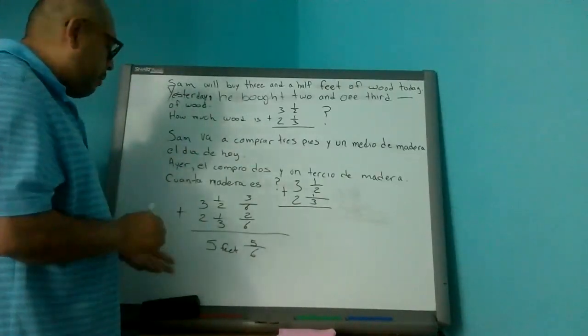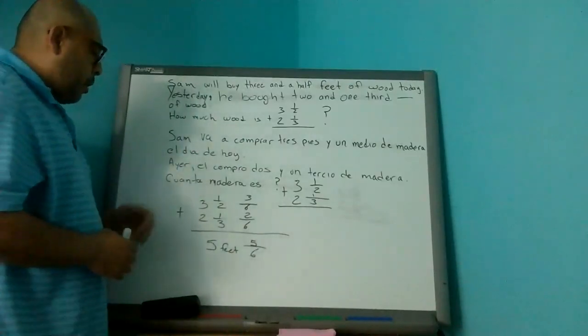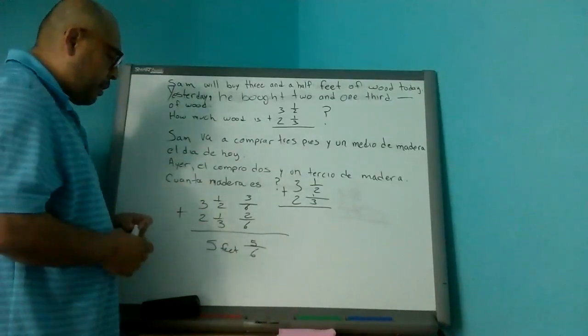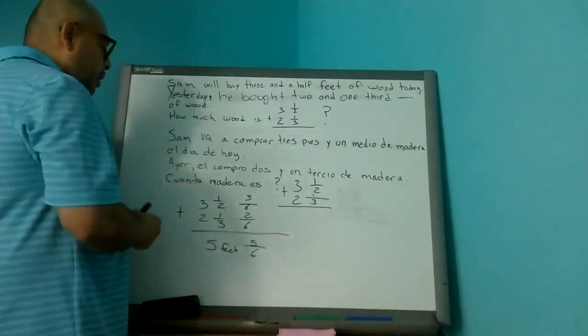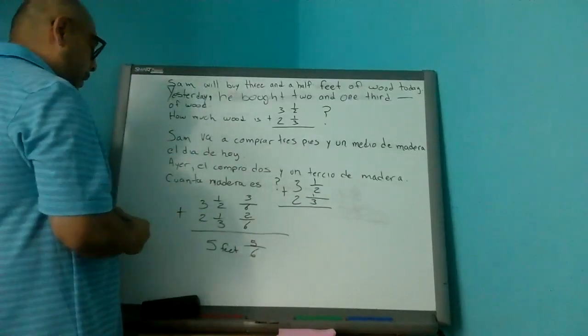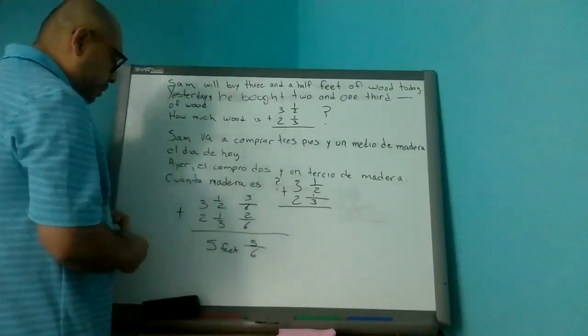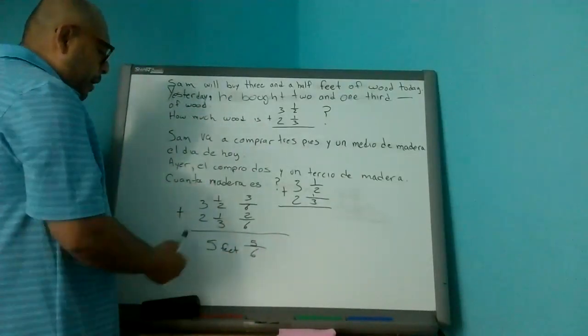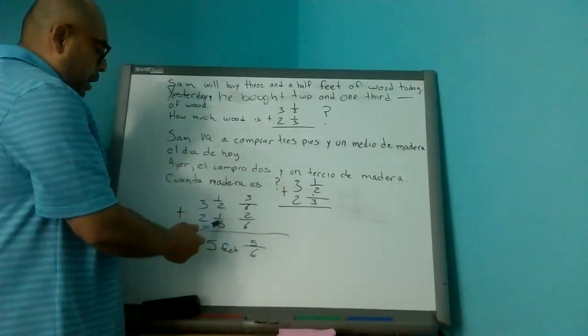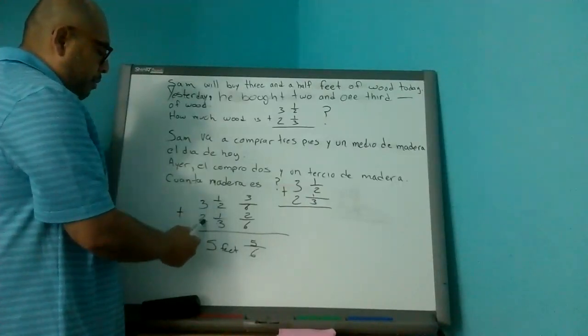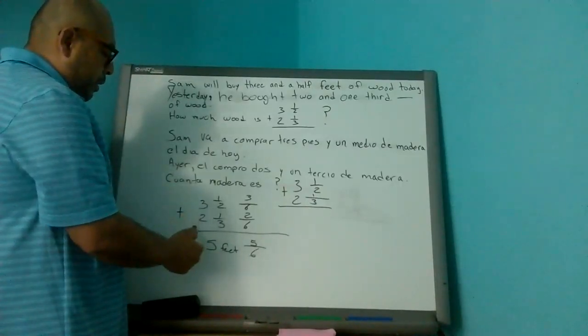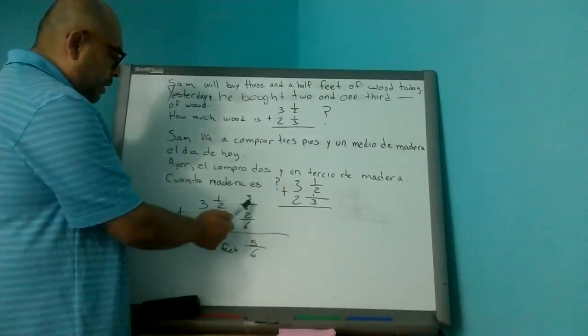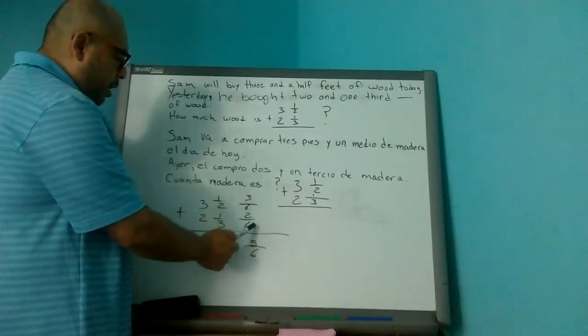Now let's go in Spanish. Three feet and a half plus two feet and one third. This gives us the result of five feet and five six. Let's see the operation. We need to find the common denominator of these two numbers. If we multiply three by two, which is six. Then we raise the six as a common denominator.